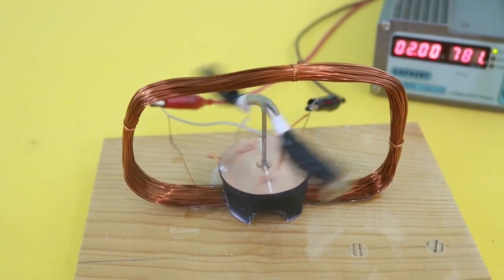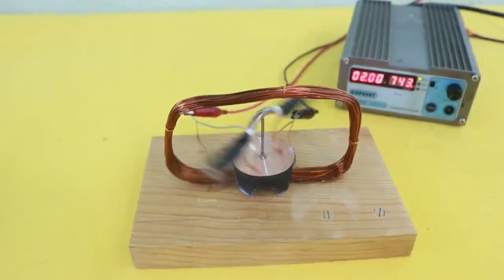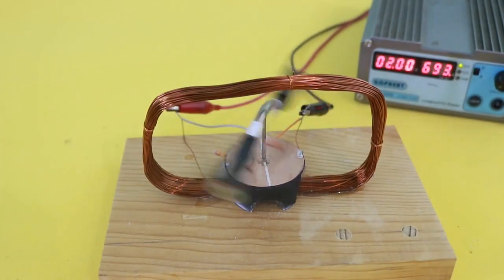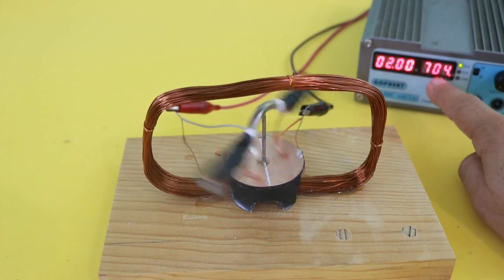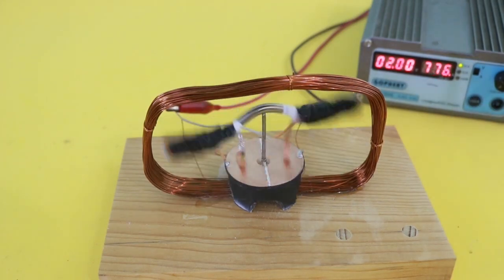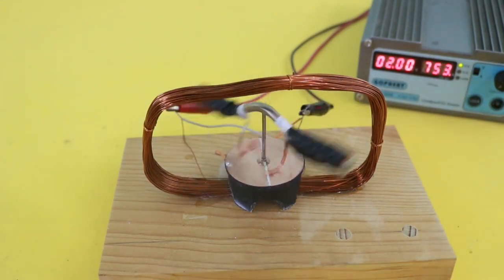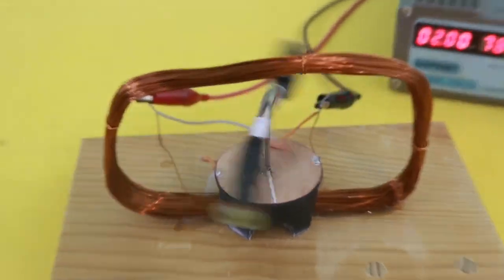The motor is now working. Two volts and as you can see the current is rather high, 700 milliamps, but the motor is working pretty well.